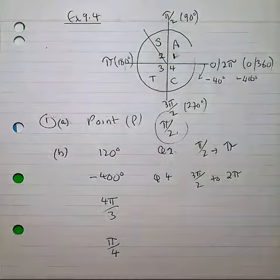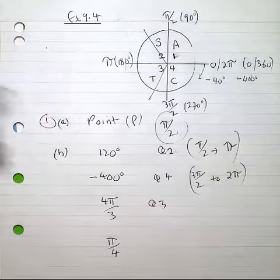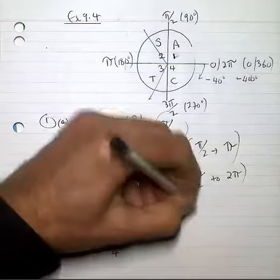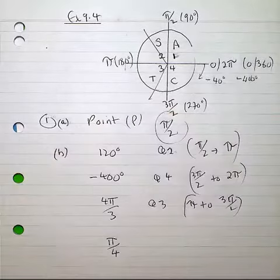4π over 3, you can see would be in quadrant 3, which is the π to 3π over 2 quadrant.